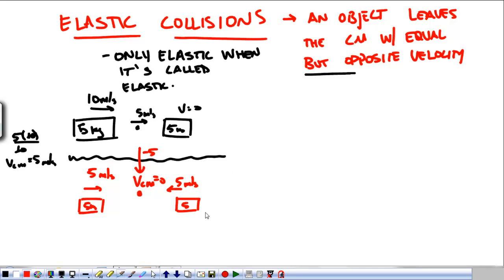So what's going to happen after they hit with respect to the center of mass is that those velocities flip around. V1 just becomes negative V1, or 5 meters per second in the opposite direction, and this is now positive 5 meters per second.